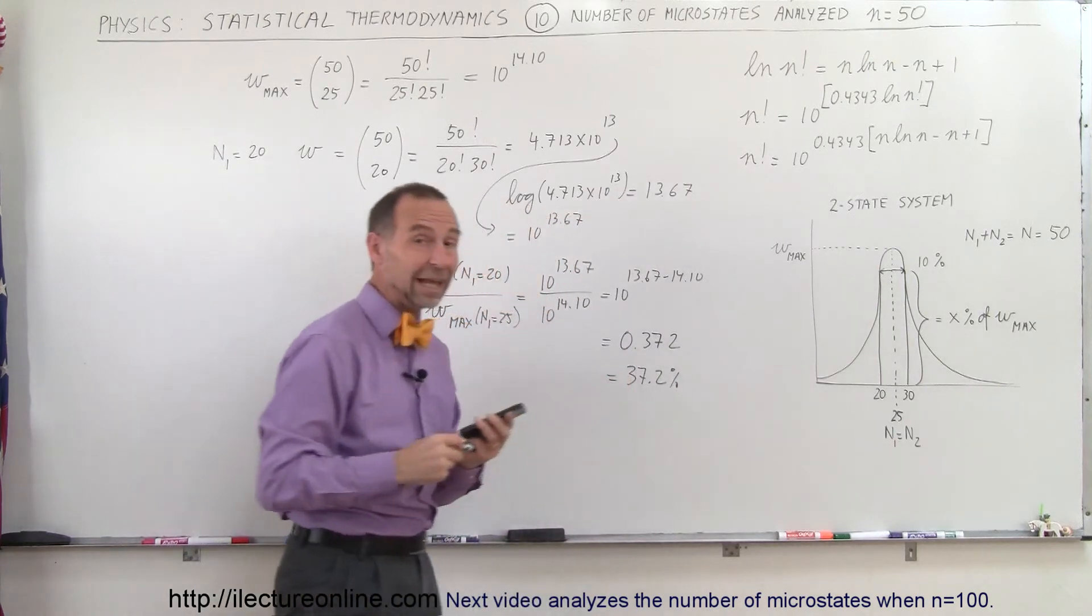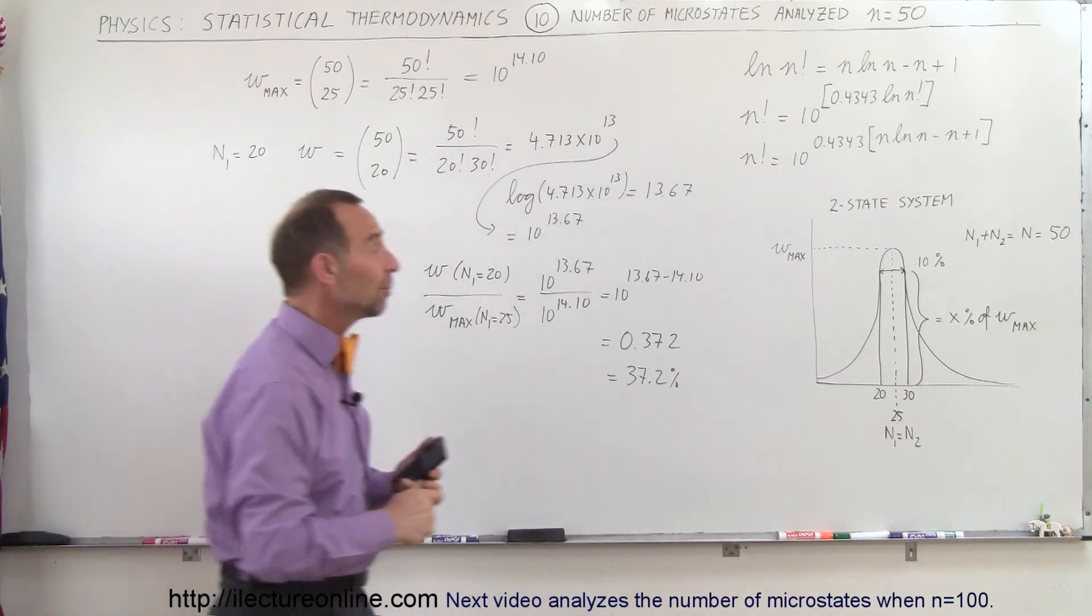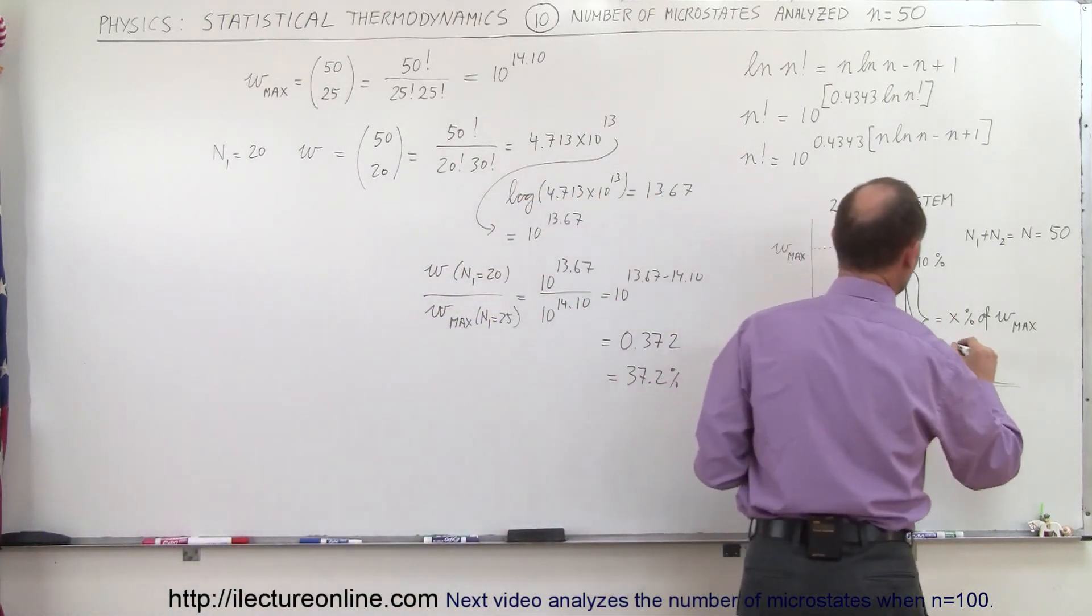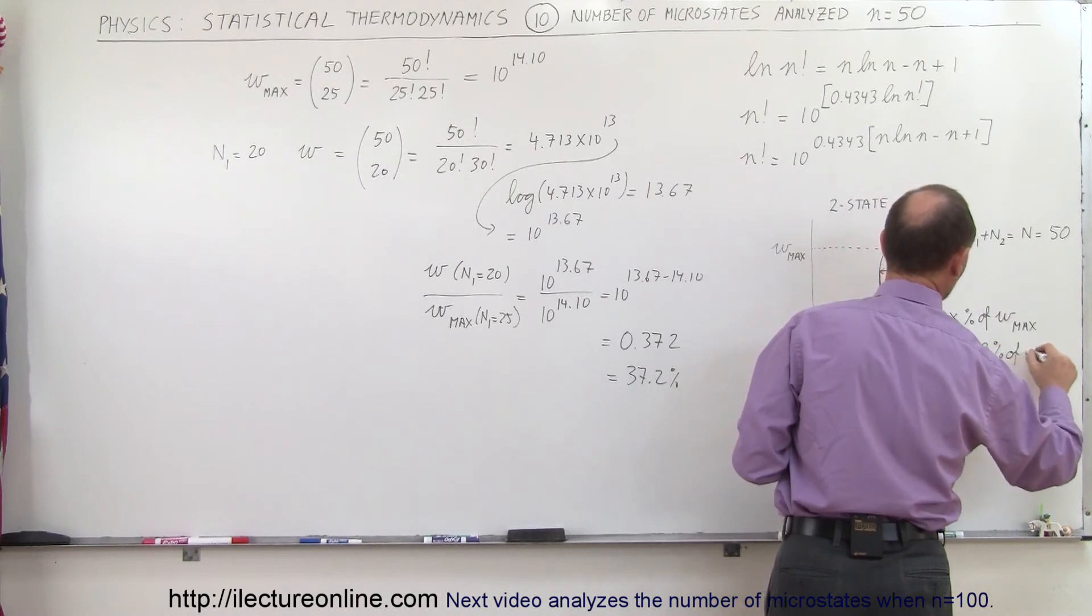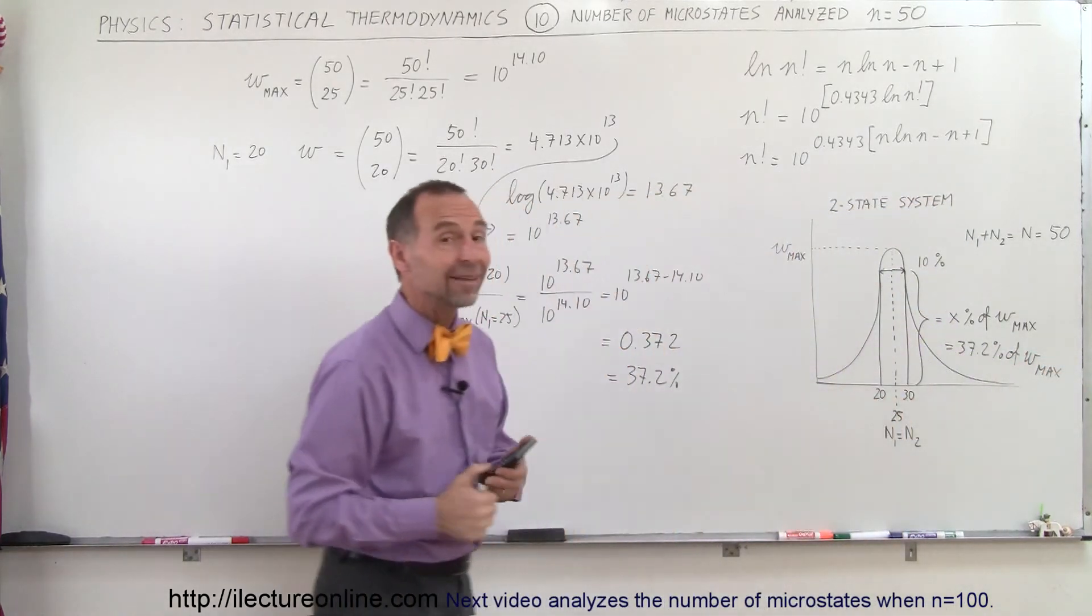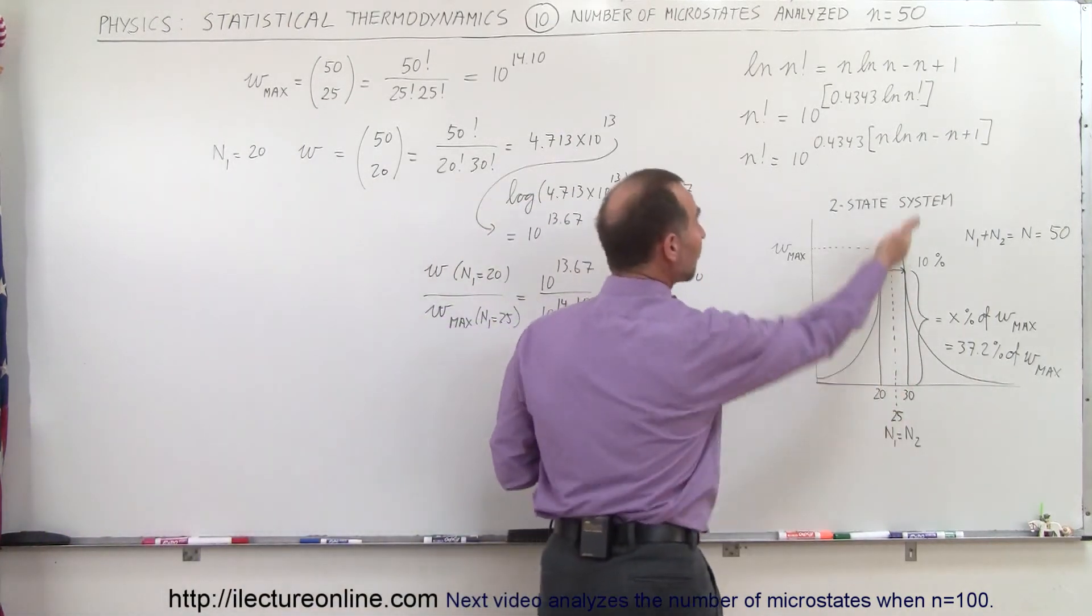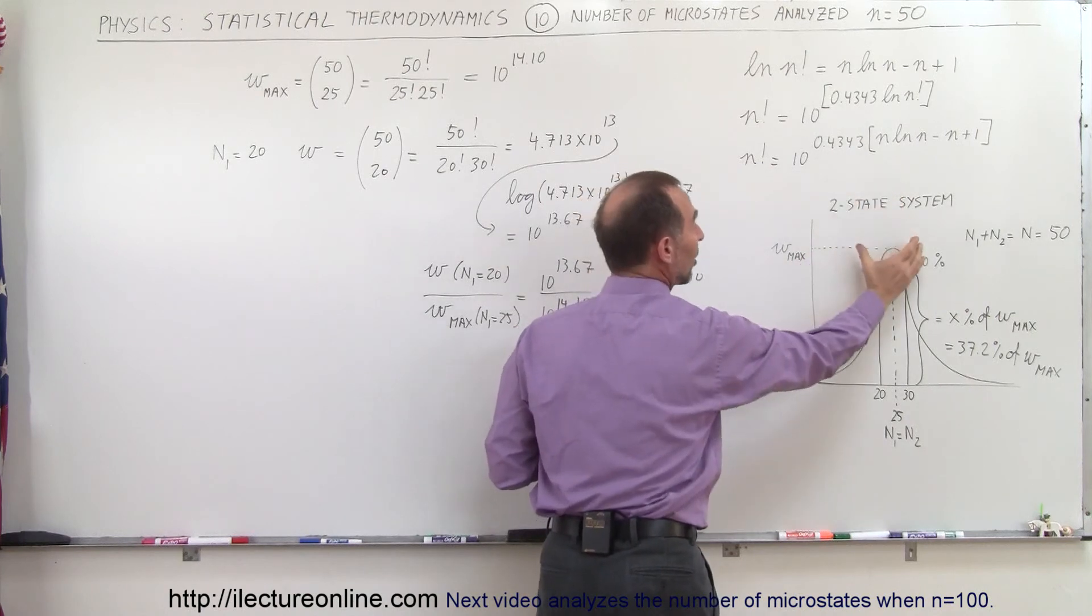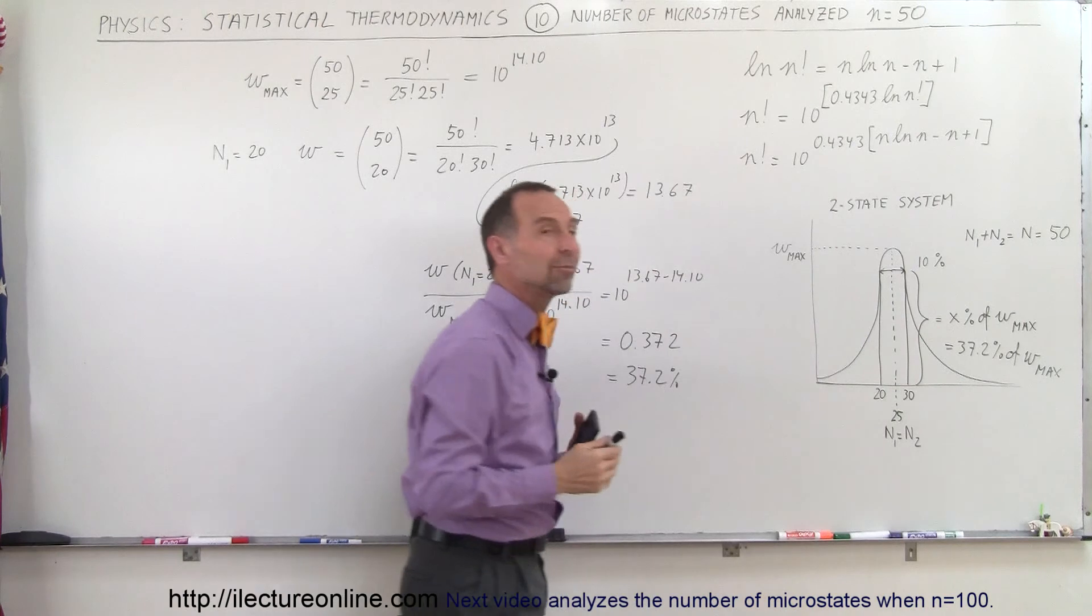Remember when we did it when N was equal to 10, I believe it was somewhere in the 85% range. So now we're down to 37%. So this is now only 37.2% of the maximum number of microstates. So that means that as N becomes larger, the curve becomes skinnier, meaning that you have very high values for the number of microstates, but they drop off much more quickly as you go away from that central maximum.